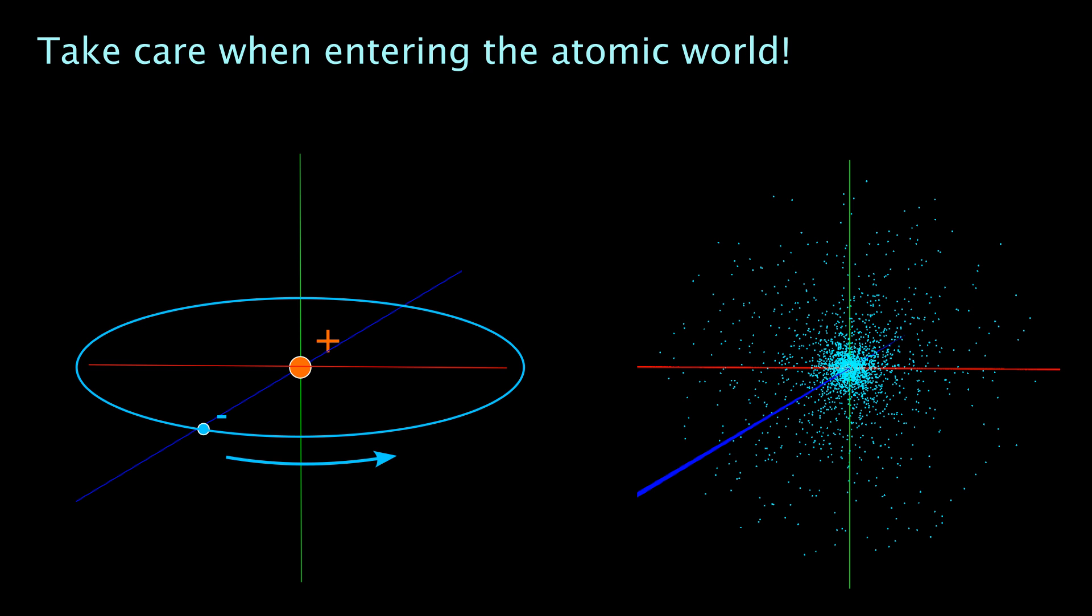This model is even able to explain a number of properties of hydrogen atoms, but it is physically impossible because the electron would lose energy when it would really circle around the proton. So we have to find another model, and this alternative model is shown on the right hand side. This electron here constitutes a wave of probability to find the electron at a given location. The denser this cloud is depicted, the higher the probability to actually find the electron at this place.